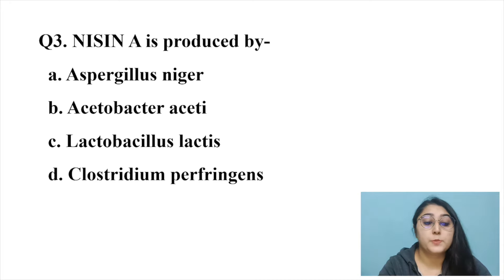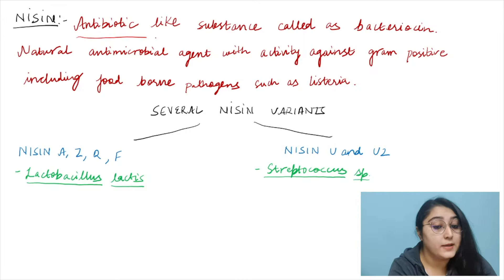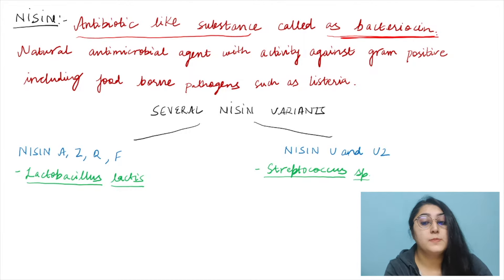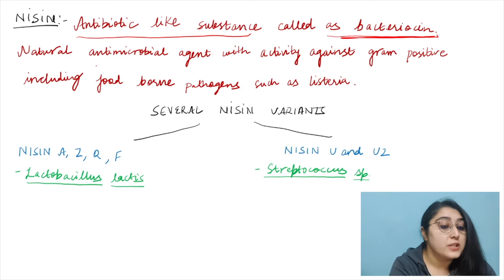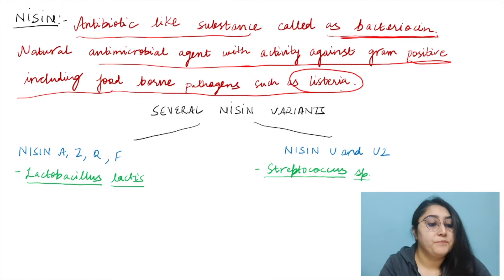Question three: nisin A is produced by which organism? The options are Aspergillus niger, Acetobacter aceti, Lactobacillus lactis, and Clostridium perfringens. Nisin is an antibiotic-like substance — a natural antimicrobial agent active against certain gram-positive bacteria including foodborne pathogens such as Listeria.